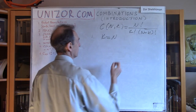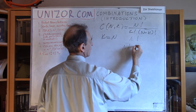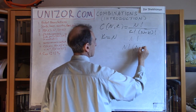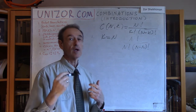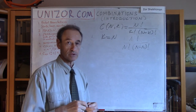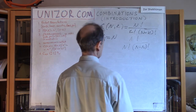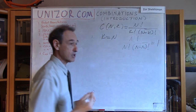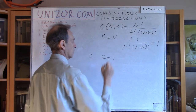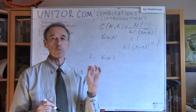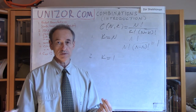Let's check: n factorial divided by n factorial and n minus n factorial. n minus n is zero, and zero factorial equals one by definition. So we get n factorial divided by n factorial times one, which is one — exactly what our intuition says it should be. Another variant: what if k equals one? I'm picking only one object out of n. How many different combinations of one object out of n exist? Obviously, n.